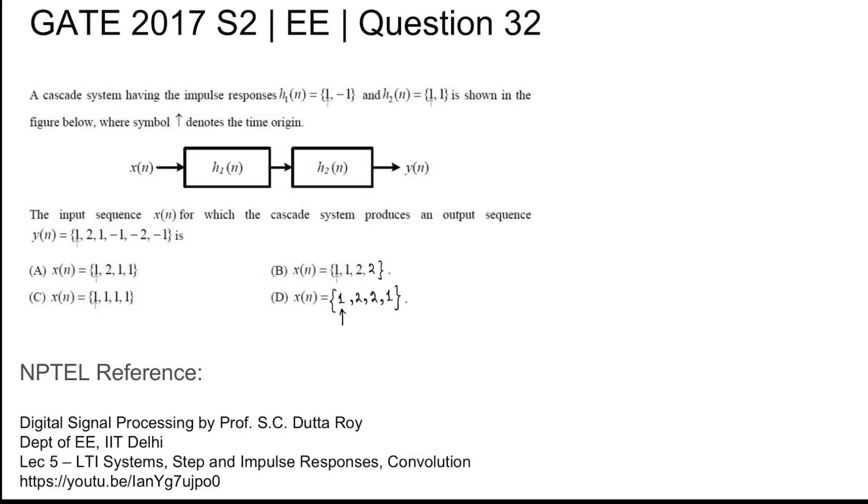GATE 2017 Set 2 Electrical Engineering Question Number 32. A cascade system having the impulse response h1(n) = {1, -1} and h2(n) = {1, 1} is shown in the figure below.